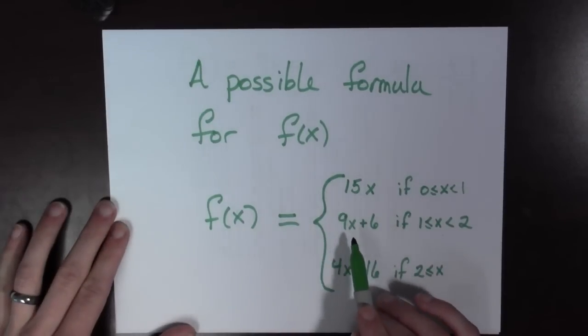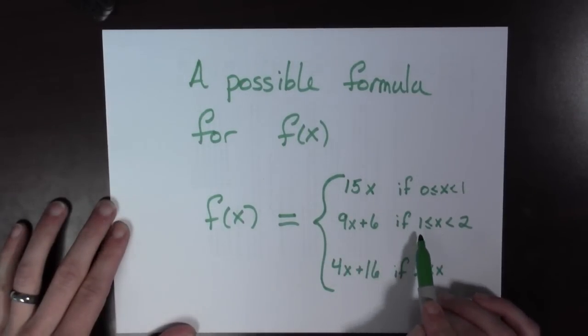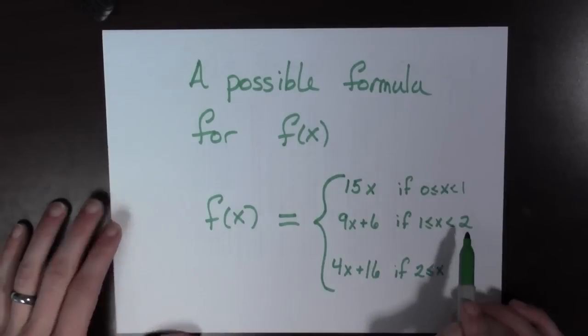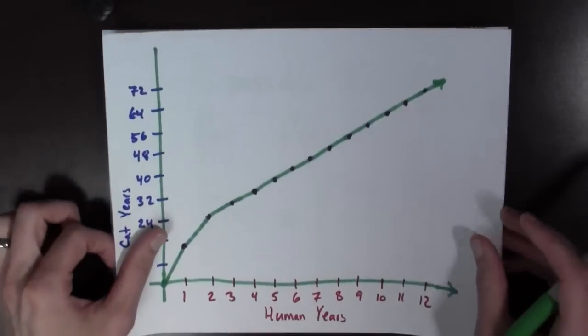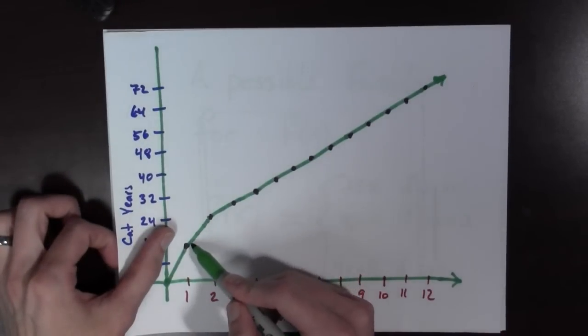f of x equals 9x plus 6 if 1 is less than or equal to x is less than 2. And we can see this as well. Here we go. That's this part right here.